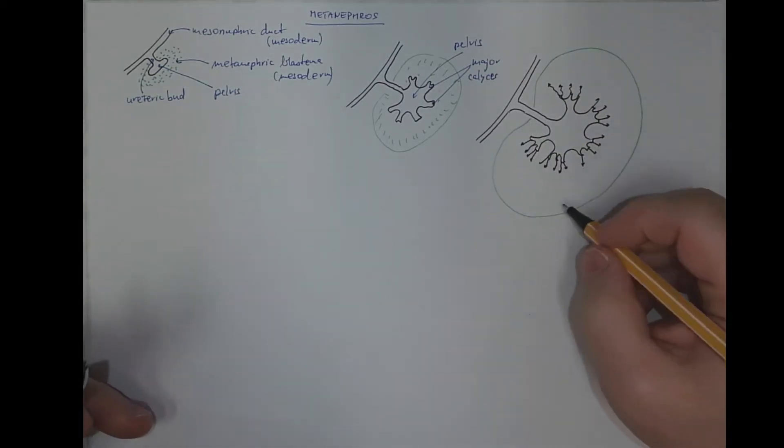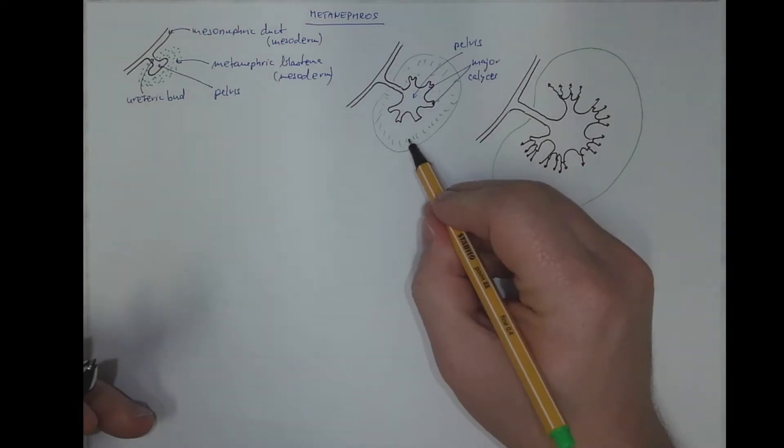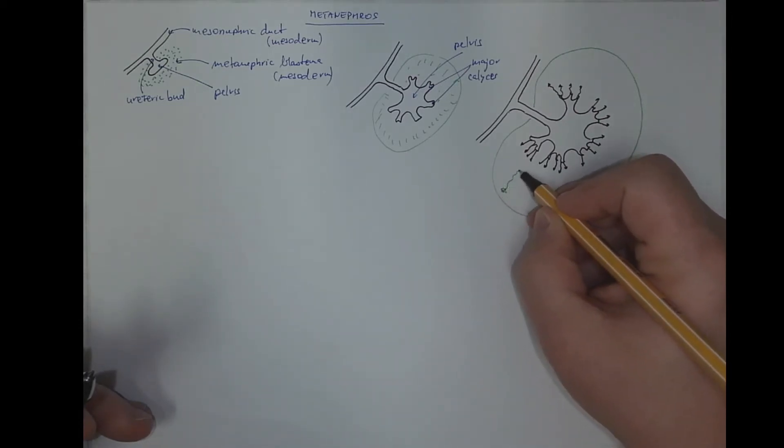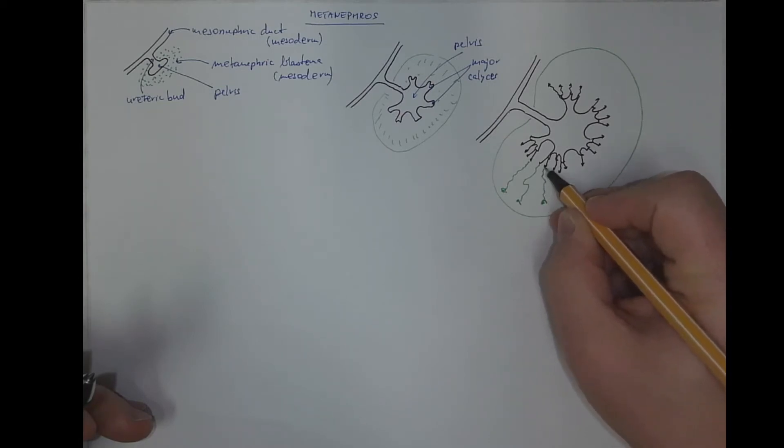Well, from the material of the metanephric blastema, the nephrons are formed, including all their ducts, the Bowman's capsules and ducts.